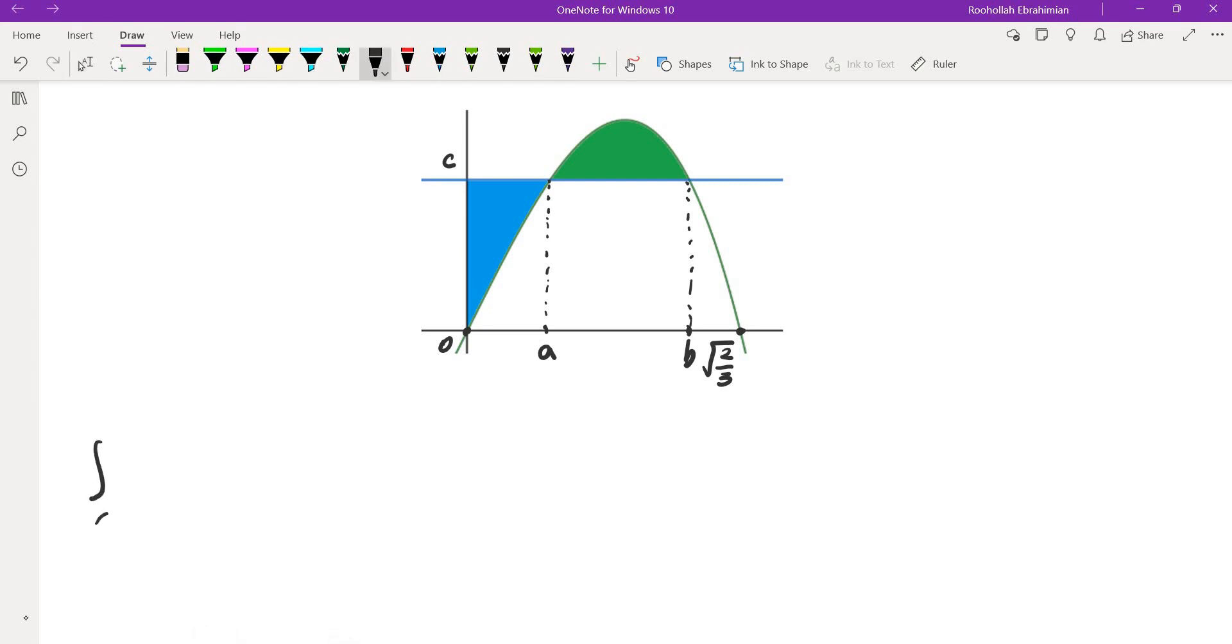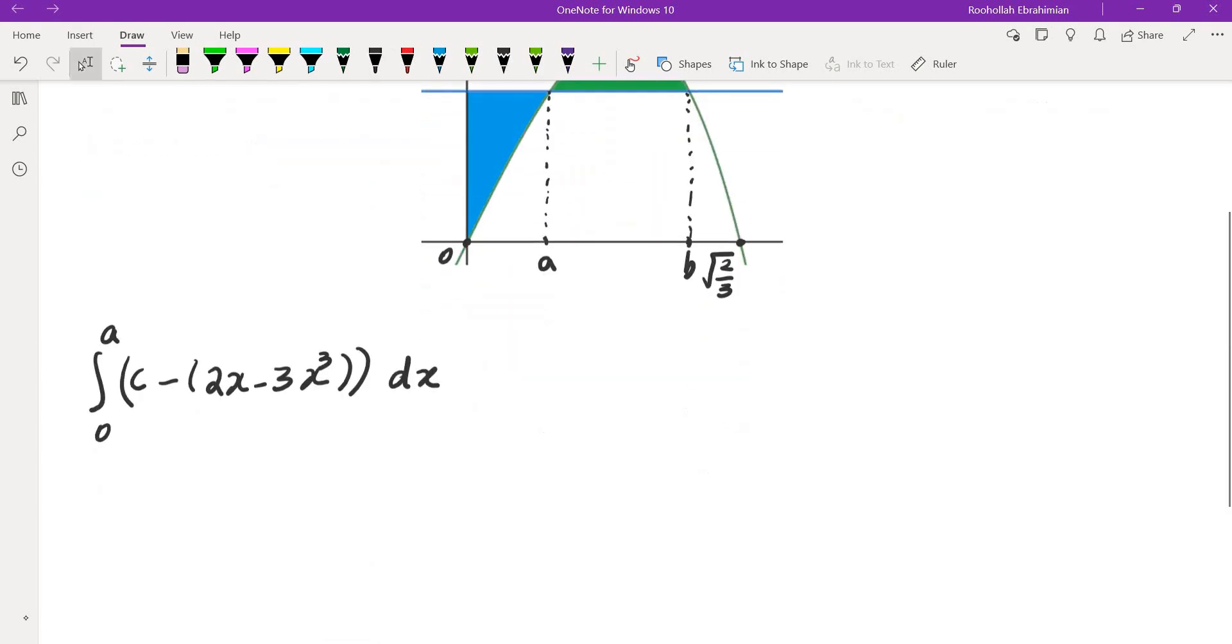The blue area is the integral from 0 to A of top, which is c, minus the bottom, which is 2x minus 3x cubed, dx. So this is the blue area.